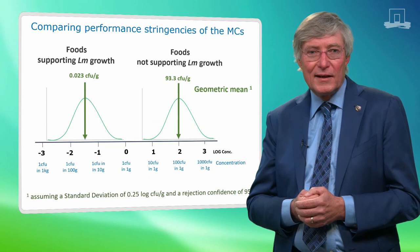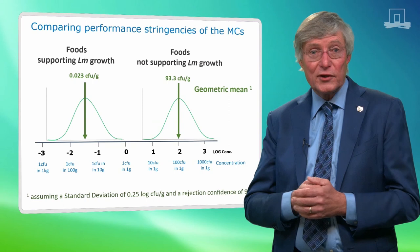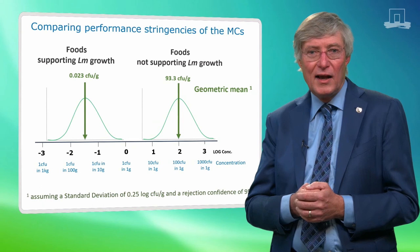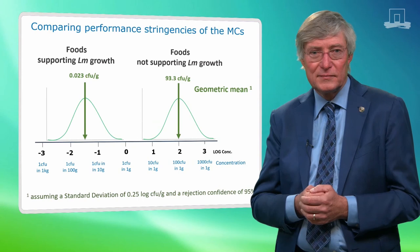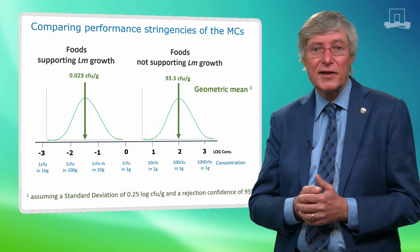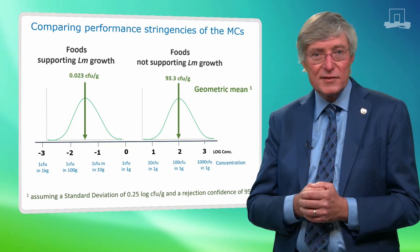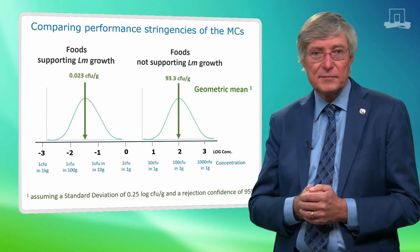In this slide, I place the MCs for the two groups of RTE food products side by side to compare their stringency of control over LM. The left plot indicates the distribution of LM counts in a lot of food supporting growth of LM, and the right plot is for a lot of food that does not support LM growth. As you can see, the geometric mean for the food lot supporting growth is between 3 and 4 logs lower, in part providing for what Codex considered a necessary safety margin. So while both MCs should not be considered as lines in the sand, they do provide for a risk-based and proportional stringency of control on the occurrence of LM in RTE foods.